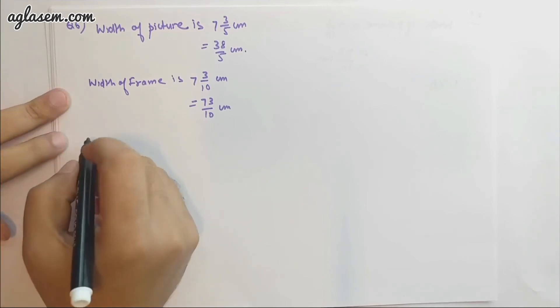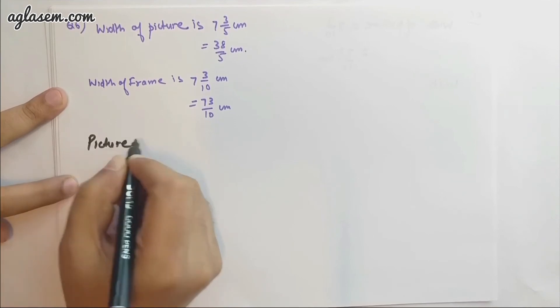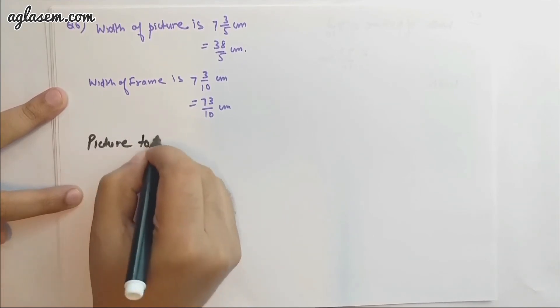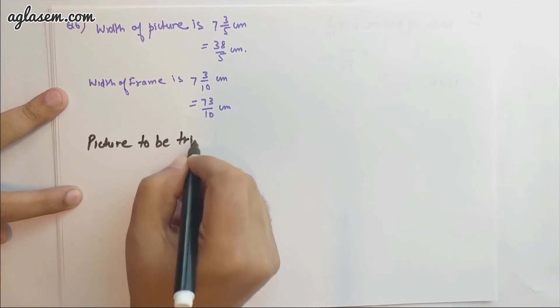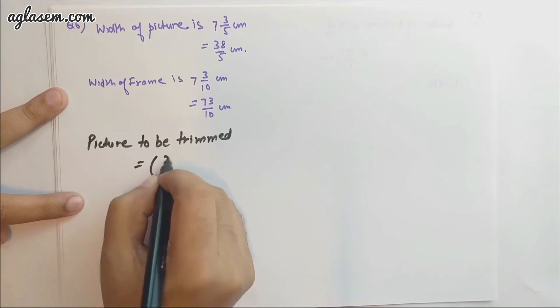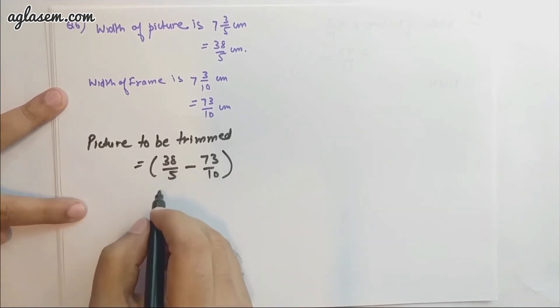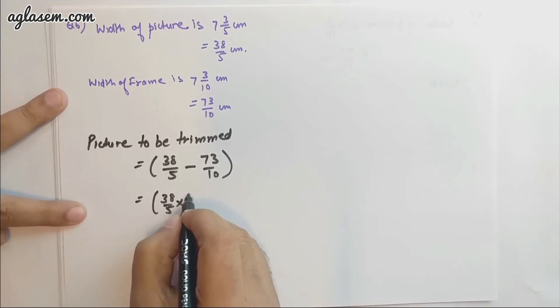The question will be answered by finding the width to be trimmed: 38/5 - 73/10. First I need to convert it into like fractions. 38/5 - multiply and divide by 2.